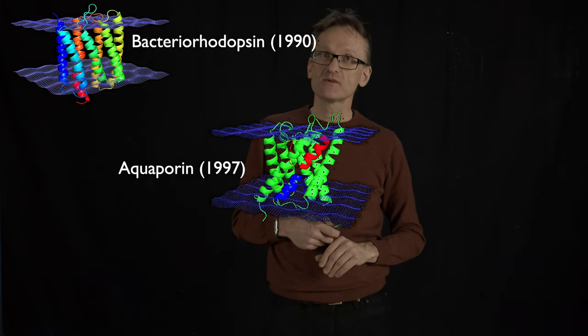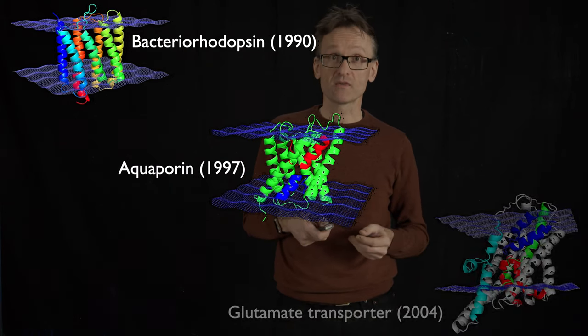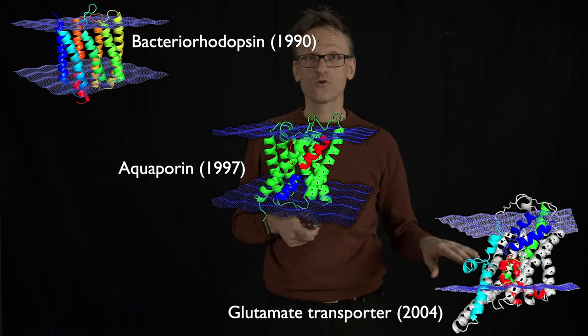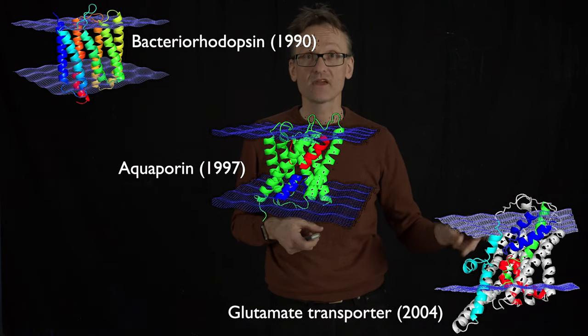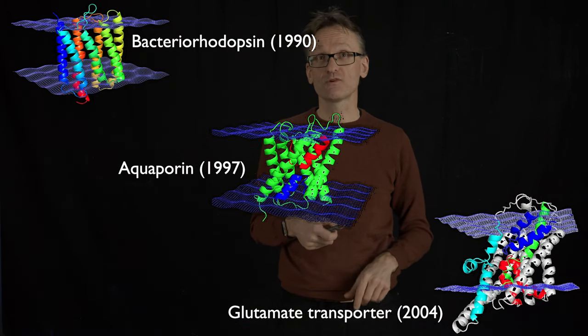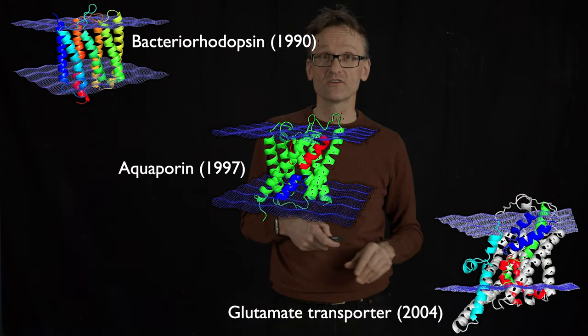But as time has gone on we've seen more and more proteins that are very complicated. Glutamate transporter, we have a horizontal helix here, multiple re-entrant regions, two proteins are likely interacting with each other. I won't even start to go into details.